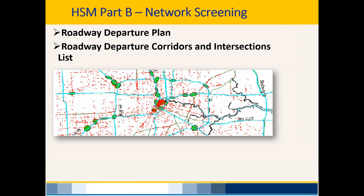Part B is the meat and potatoes of HSIP. Network screening is used extensively for project prioritization — in the roadway departure plan, and in developing the Strategic Highway Safety Plan, which covers all safety in the cabinet: engineering, enforcement, education, and emergency services. We produce lists of roadway departure corridors and intersections, which some of you may be familiar with from a district standpoint.